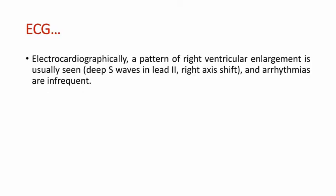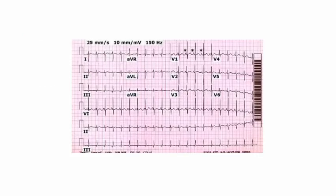Coming to diagnosis: diagnosis can be done by ECG, radiography, or echocardiography. Electrocardiographically, a pattern of right ventricular enlargement is usually seen — S waves are deep and there will be right axis shift. Arrhythmias are infrequent. Here is an ECG of a heart with Tetralogy of Fallot; you can see deep S waves and the right axis shift.